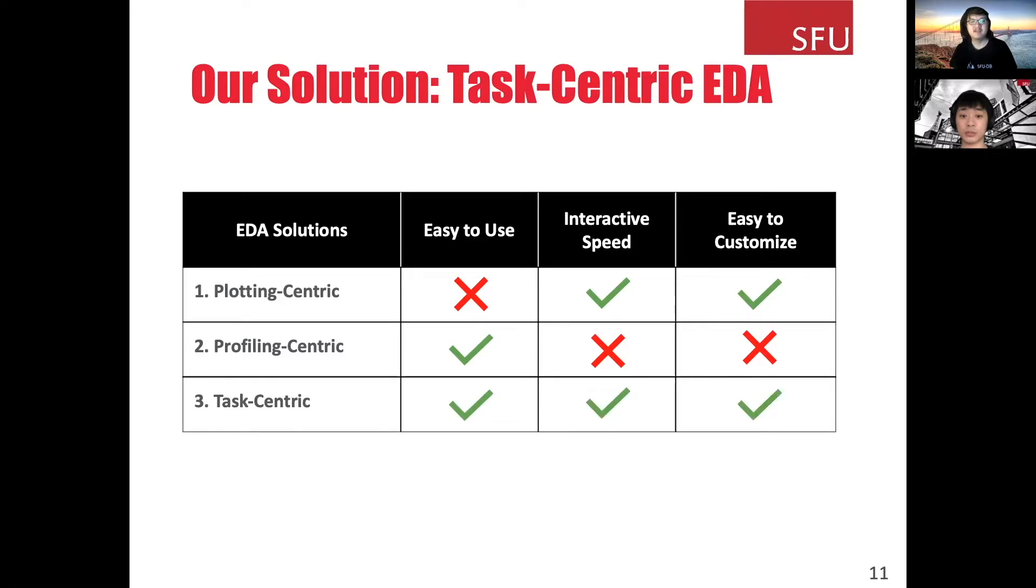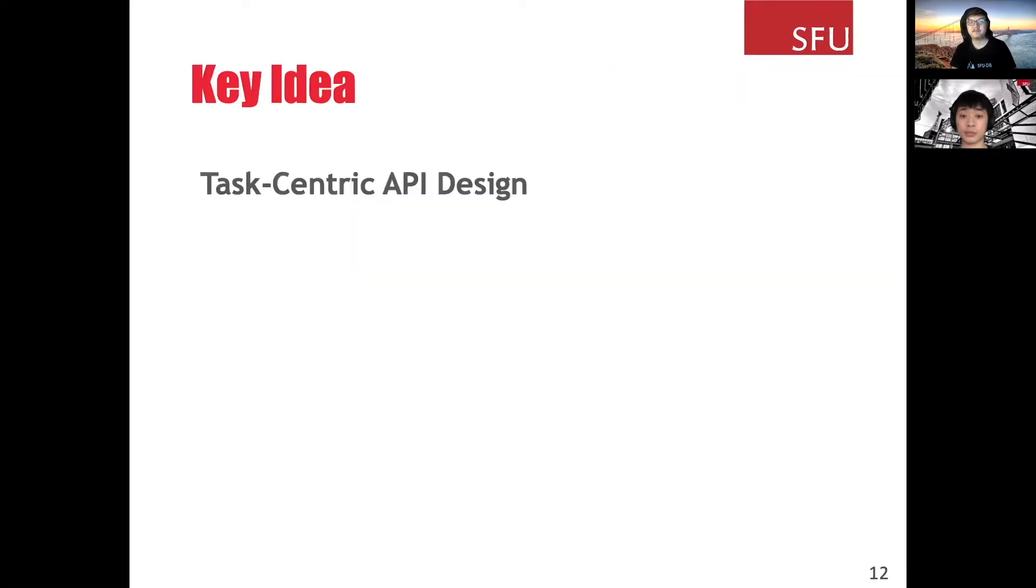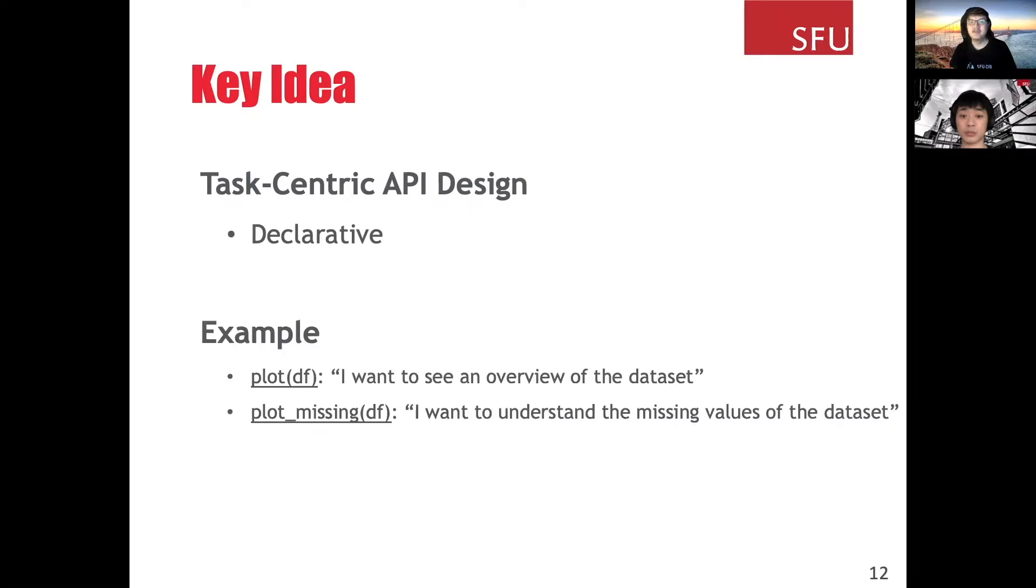Our answer is task-centric EDA. In the task-centric EDA system, each API is related to an EDA task. The task-centric EDA API design has two key ideas. Firstly, the API is declarative. That is, users only need to tell the system what they want, instead of how to do it. For example, they could tell the system, I want to see an overview of the data, using plot_df function. Or I want to understand the missing values, using plot_missing function. Then the system will automatically generate corresponding visualizations and statistics in order to finish the task.